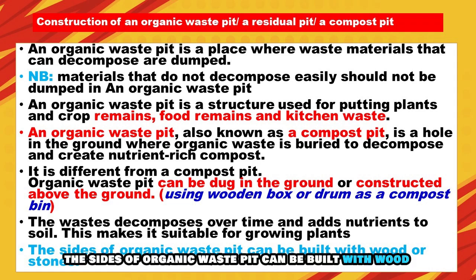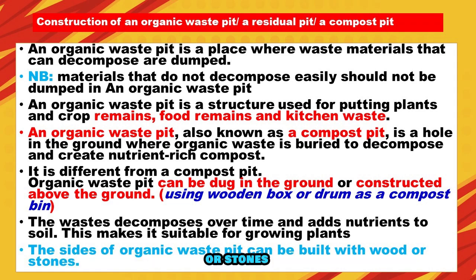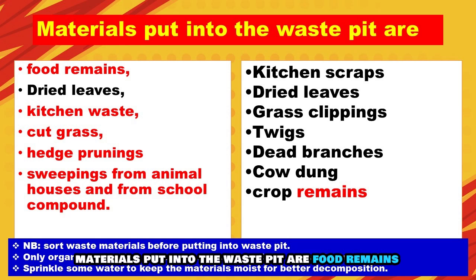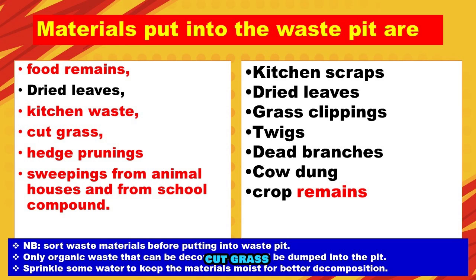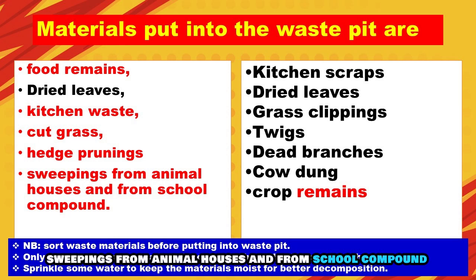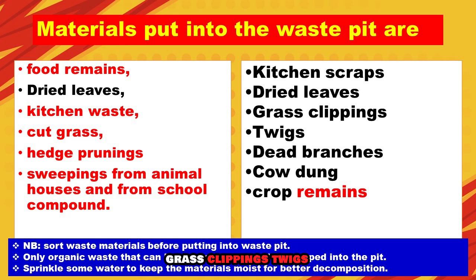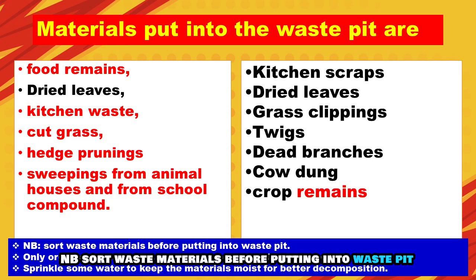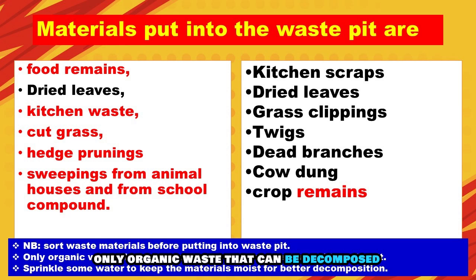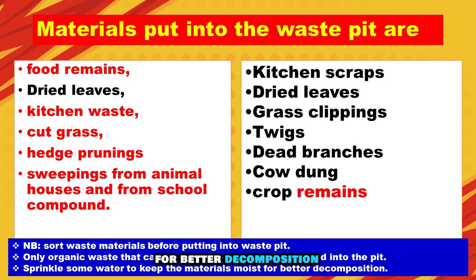The sides of the organic waste pit can be built with wood or stones. Materials put into the waste pit include food remains, dried leaves, kitchen waste, cut grass, hedge prunings, sweepings from animal houses and school compound, kitchen scraps, grass clippings, twigs, dead branches, and cow dung and crop remains. NB: Sort waste materials with water before putting them into the waste pit. Only organic waste that can be decomposed should be dumped into the pit. Sprinkle some water to keep the materials moist for better decomposition.